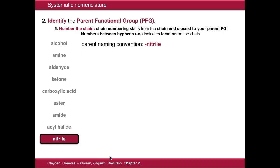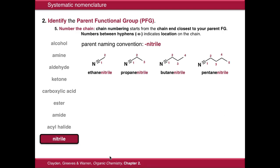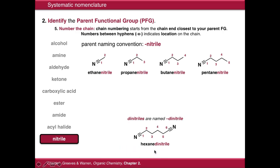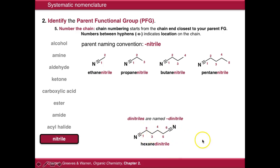Nitriles simply end with -nitrile, so we have ethanenitrile, propanenitrile, butanenitrile, and so on. Again, these will always terminate a chain. Dinitriles are simply -dinitrile, so hexanedinitrile — no need for numbering because we know the nitrile groups will be at the beginning and the end of the chain.